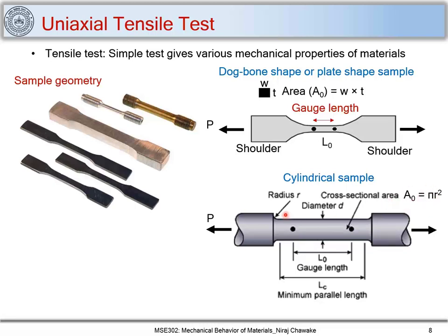Looking at both sample geometries, the cross-section area between the gauge length is uniform or constant, while the cross-section area increases toward the shoulder region. The smaller cross-section area in the gauge length ensures the material there experiences the maximum stress compared to the shoulder region, so the material fails between the two gauge points.